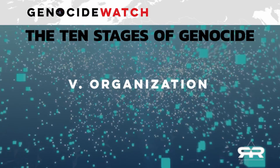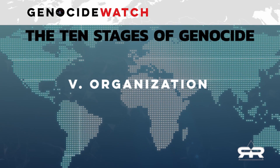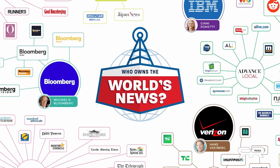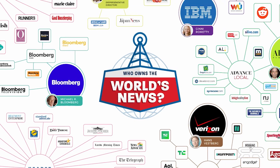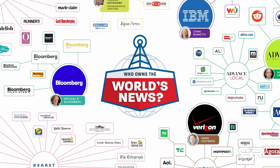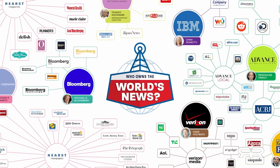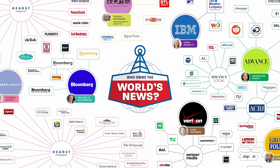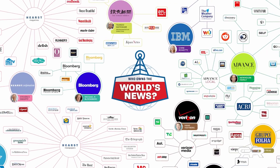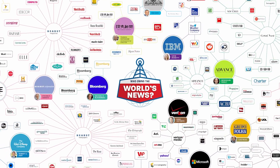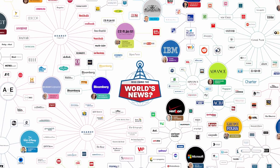Stage five: organization. Genocide is always organized, usually by the state. The emerging globalist society we are seeing today is highly organized. They control all of pop culture, the media, and big pharma. They are most likely the most organized tyranny in all of human history.